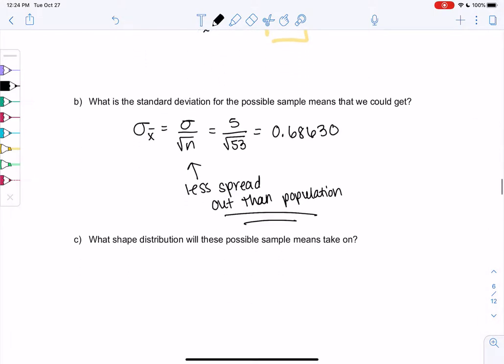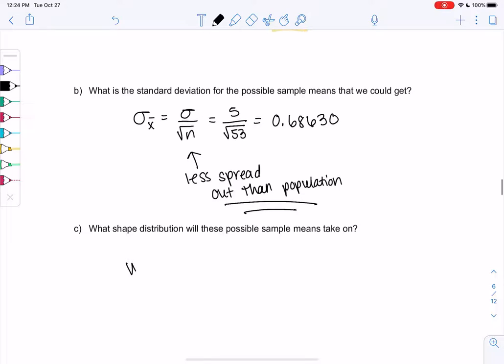And then what shape? Remember, we like to know the shape. So what shape distribution will these means take on? We don't know yet. We're going to hope we get that normal population again, but we don't know. So we'll talk about that later.